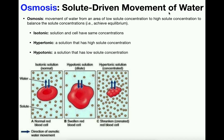In this video we're going to talk a lot about osmosis. Osmosis is basically solute-driven movement of water. We can define it more concretely as the movement of water from an area of low solute concentration to high solute concentration, and its purpose is to balance the solute concentration — in other words, achieve equilibrium. The key with osmosis is there has to be a difference in solute concentration on either side of a membrane.